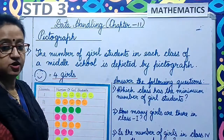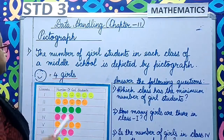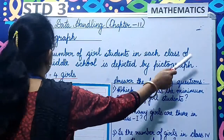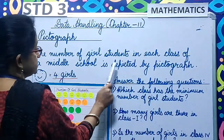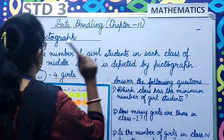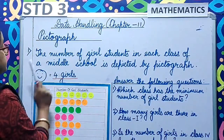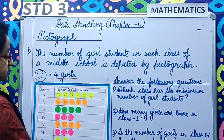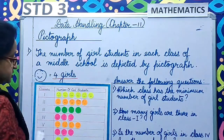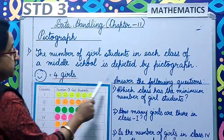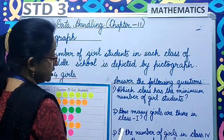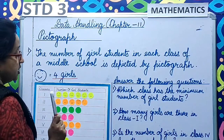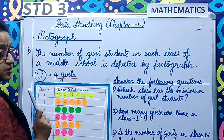So let us solve a sum on pictograph. The number of girl students in each class of a middle school is depicted by a pictograph. The key given to you is one smiley equals four girls. Based on this picture and the key, you have to solve these three questions. So you have to be very careful in observing this picture.